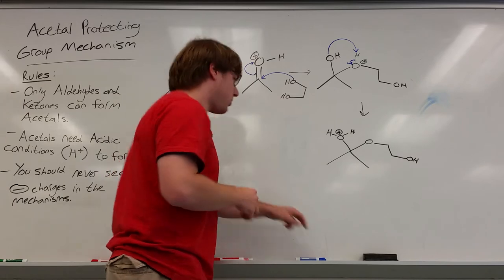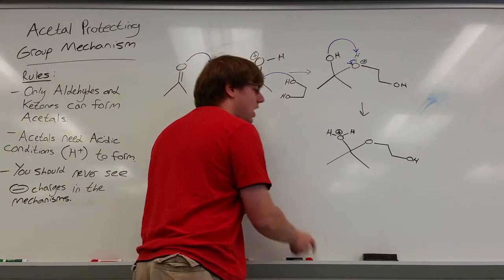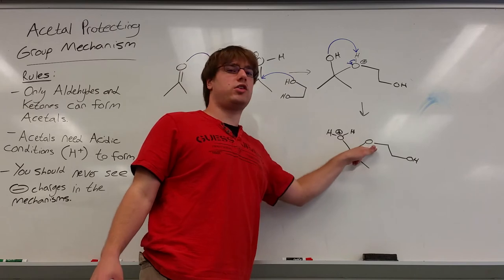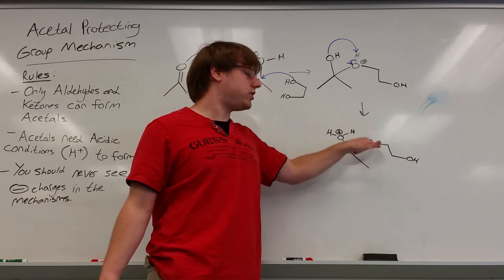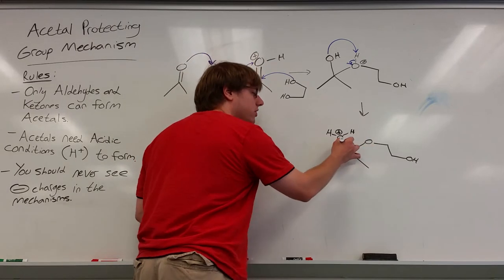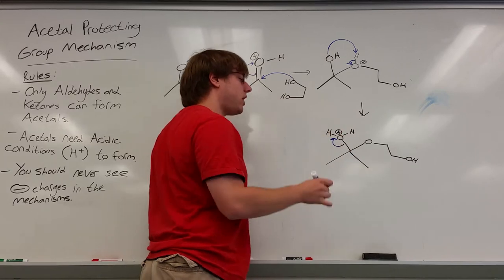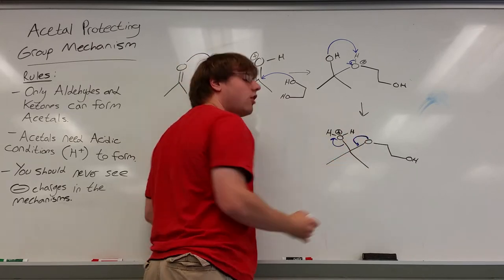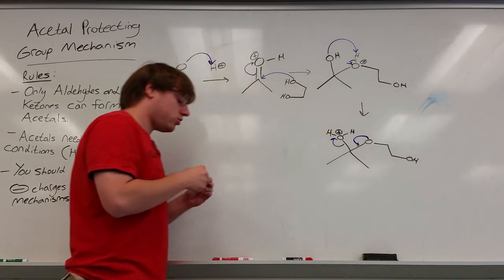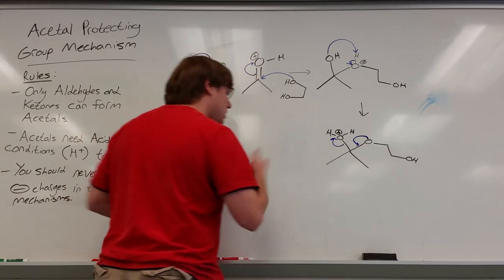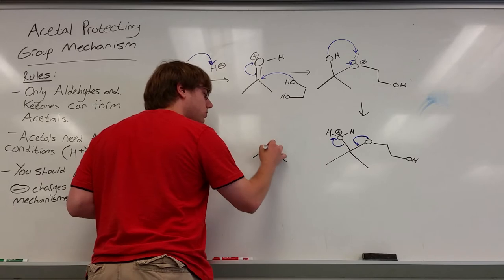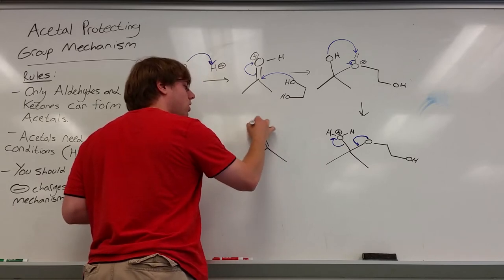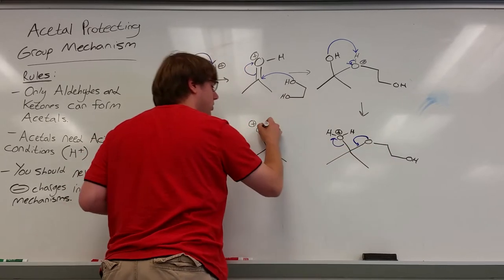Now here comes the important step that I'm going to keep repeating. I have a good leaving group and on that very same carbon I have an oxygen that is either negative or neutral. In this case it's neutral. Now what I know is this leaving group wants to leave but what's going to happen to make it leave is the other oxygen that shares that carbon comes down forms a double bond and kicks that H2O out. Now I'm left with a double bond O that is connected to two carbons and an OH.